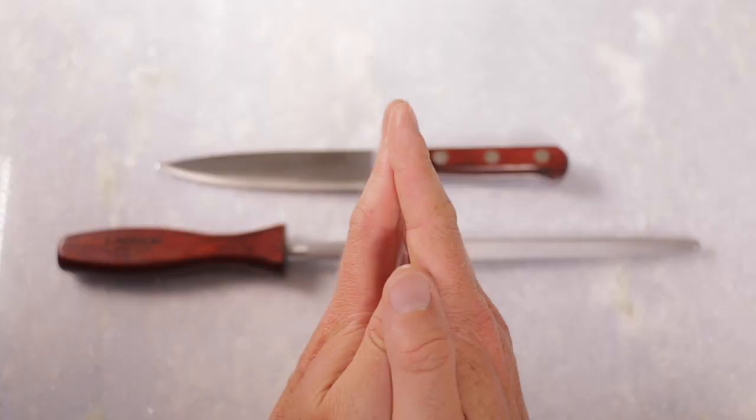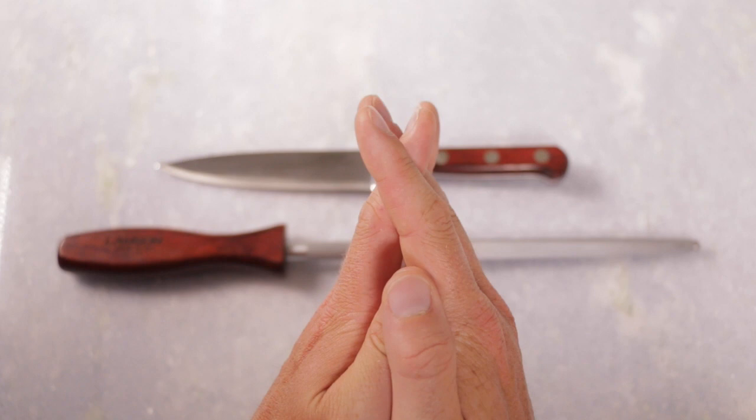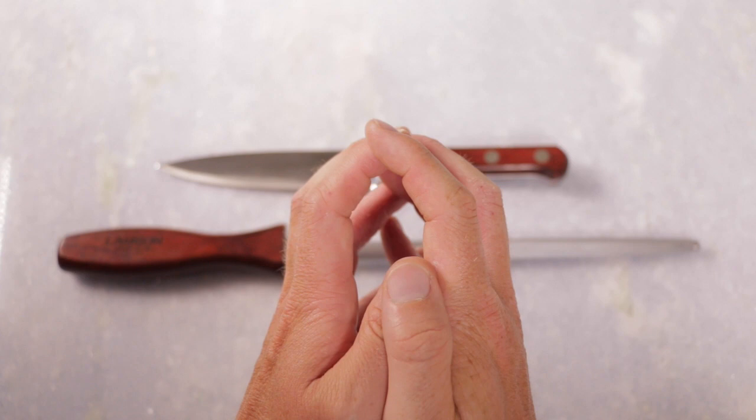The edge of your new blade basically looks like this. With constant use, the steel fibers on your knife's edge begin to break down and look like this, and will eventually wear down to look like this.